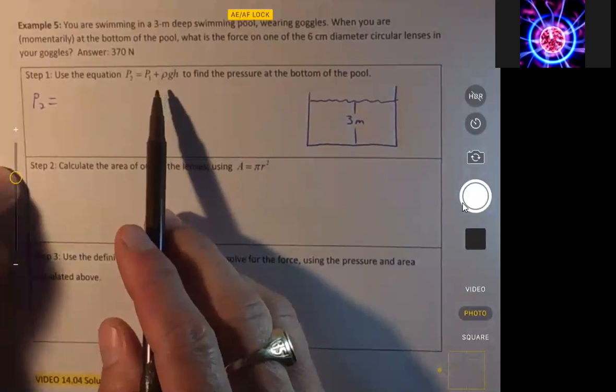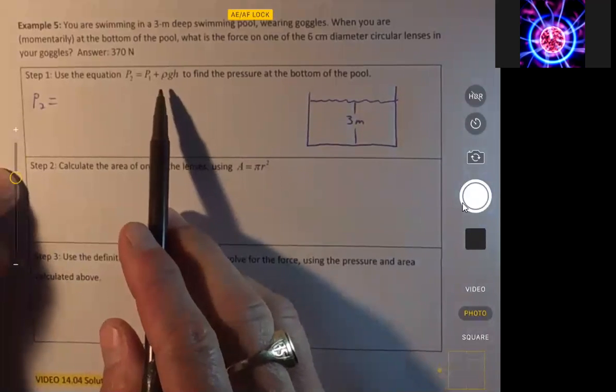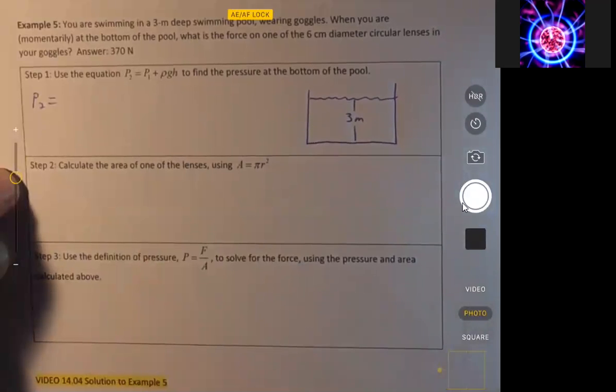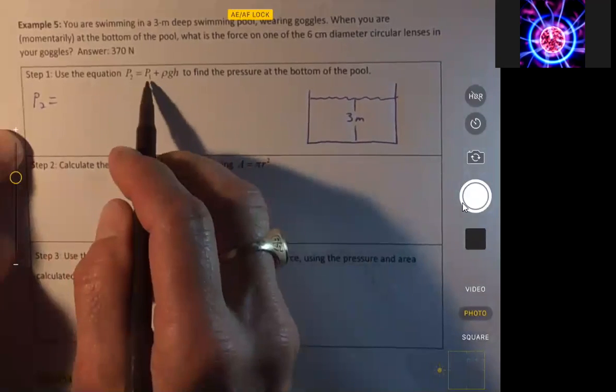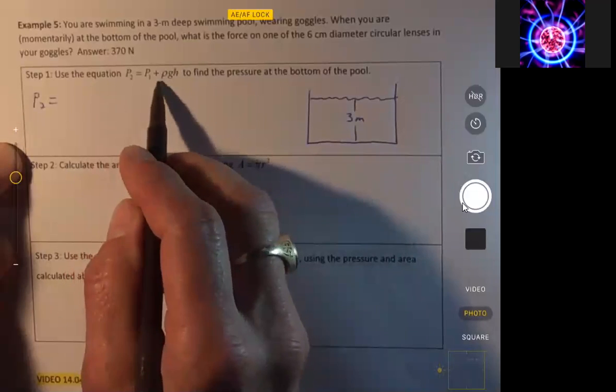For this chapter, it's really important that you get familiar with all the different things that are on your equation sheet, both the equations as well as some of the constants and the different densities and pressures for things that are listed there. So the pressure at some depth is equal to the pressure up higher plus ρgh.